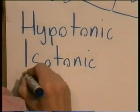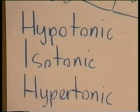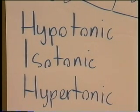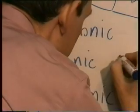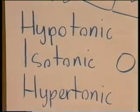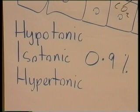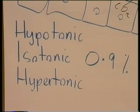The third term is hypertonic: in a hypertonic solution, the osmotic pressure is greater than that of plasma. An isotonic saline solution would be 0.9%. That's why when you give intravenous fluids, they normally contain 0.9% sodium chloride — 0.9% saline — so they have the same osmolarity as the plasma.